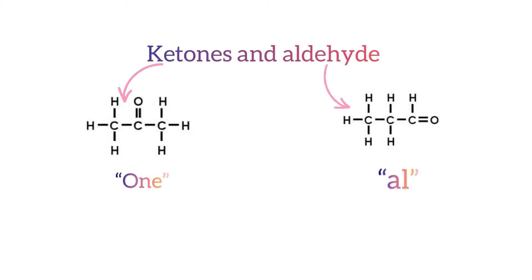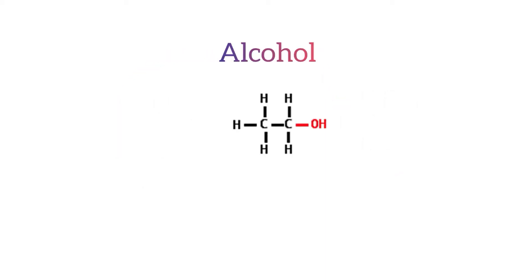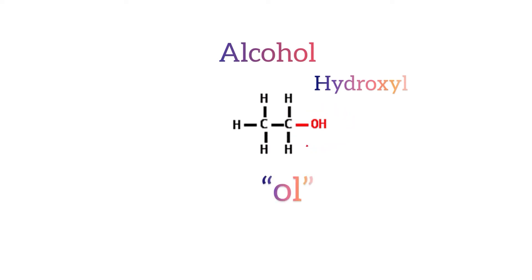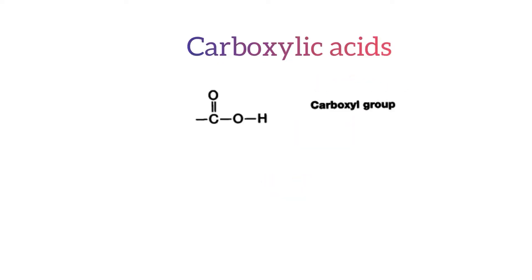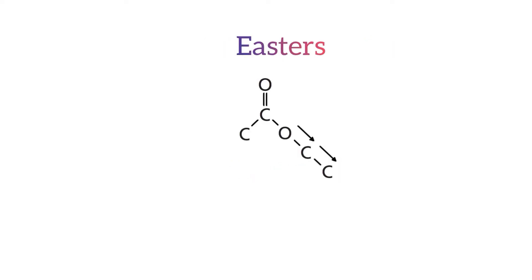These suffixes should be written immediately after the locant. Alcohol has a functional group called the hydroxyl functional group, which contains oxygen single bonded to hydrogen, therefore the molecule gets the suffix '-ol'. Carboxylic acid has a functional group called the carboxyl functional group, meaning it contains both hydroxyl and carbonyl functional groups bonded with a single covalent bond, so the suffix is 'carboxylic acid'. Esters have the carbonyl functional group attached to an oxygen atom which is also attached to another carbon, therefore the suffix is '-oate'.